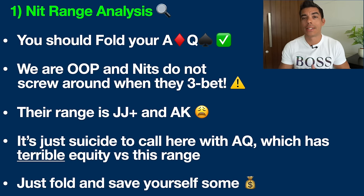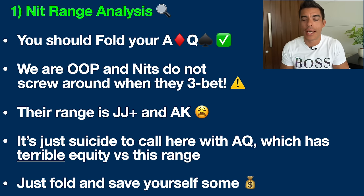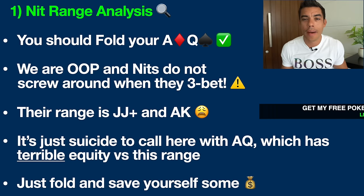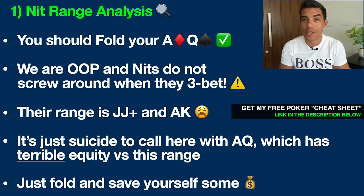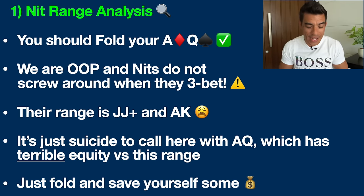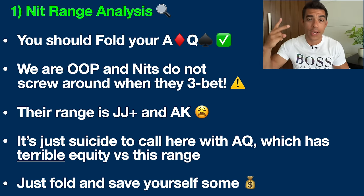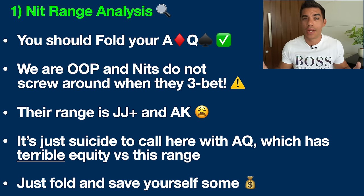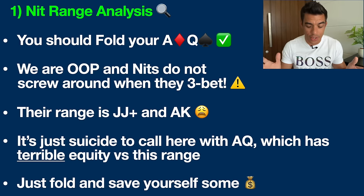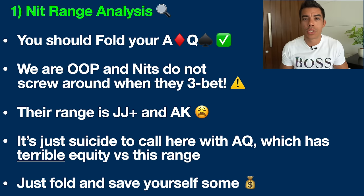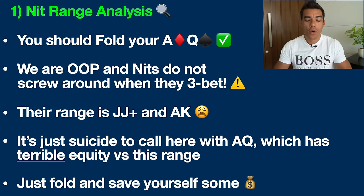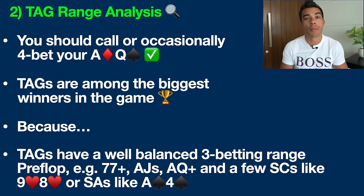We're up against a Nit — the tightest, most passive player at the table. This is the type of player who's not screwing around when they three-bet; they're sitting there waiting for aces or kings. Their range in this situation is literally jacks plus — pocket jacks, pocket queens, pocket kings, pocket aces, and ace-king. Ace-queen does very poorly against this range. It's literally suicide to call or re-raise here because this hand has absolutely terrible equity versus that range. Please just save yourself some money and fold.